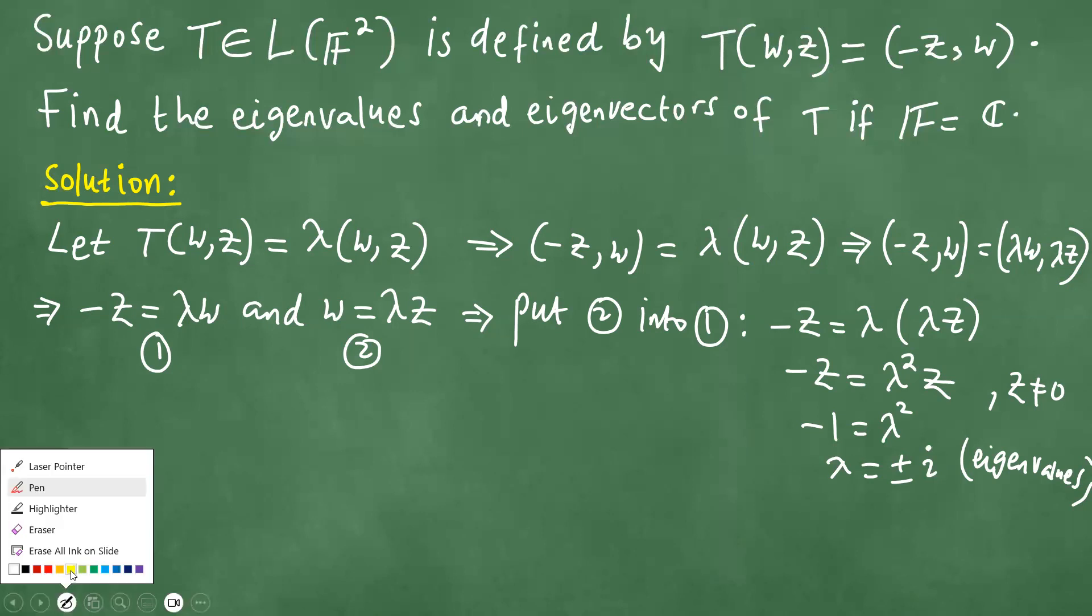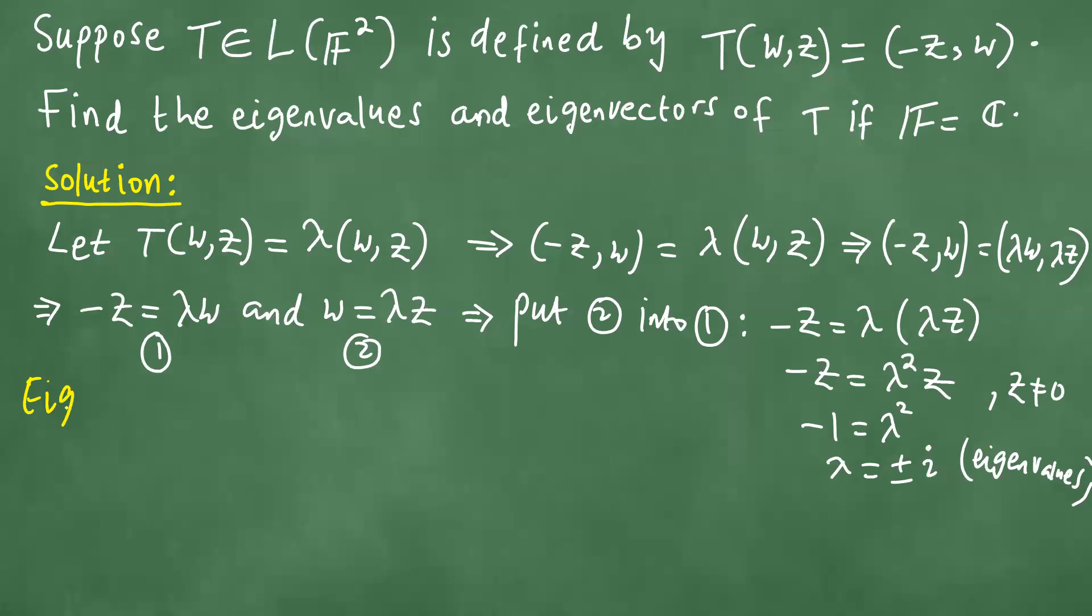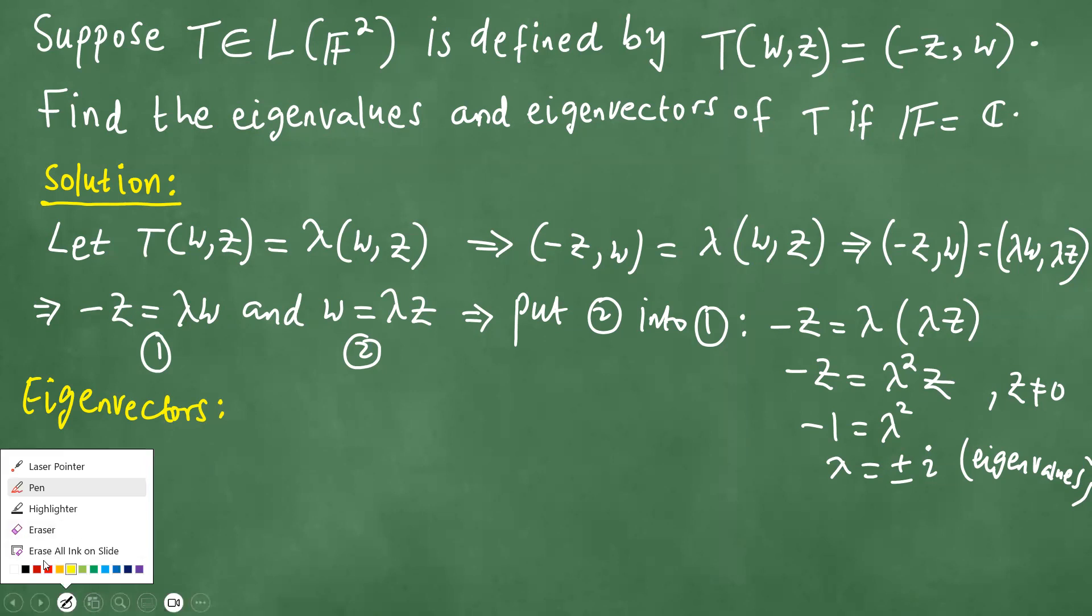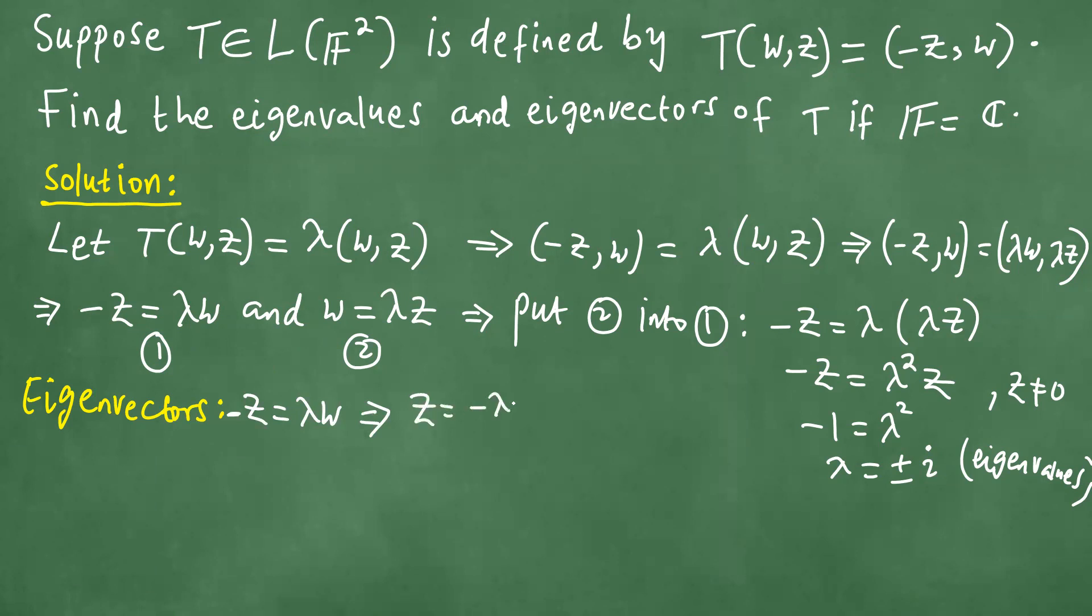For us to obtain the eigenvectors, from this point we have z = -λw. If z = -λw, and if z is -λw, that means z = -λw.